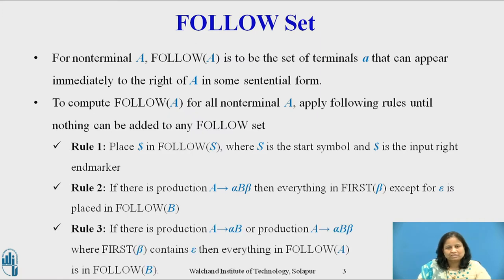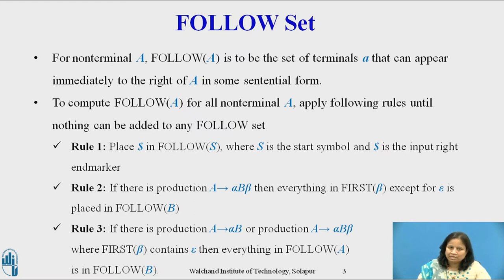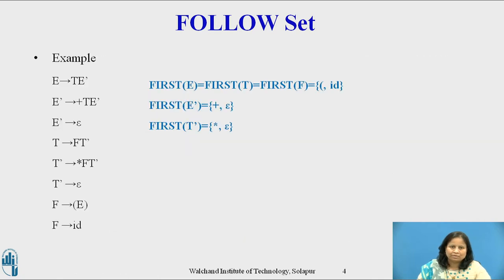Rule 3: If there is a production A derives alpha B, or a production A derives alpha B beta where first of beta contains epsilon, then everything in the follow of A is in the follow of B.